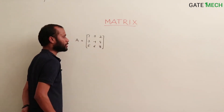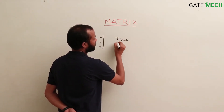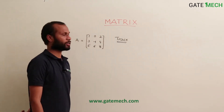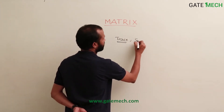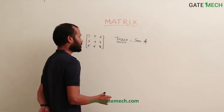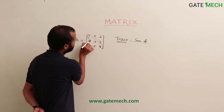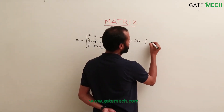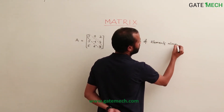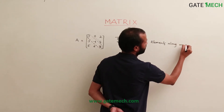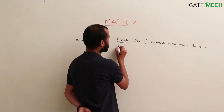This matrix is called A. There is one definition — trace. We'll see its significance later when we go through eigenvalues and eigenvectors. Trace is defined as the sum of elements along the main diagonal of a matrix, also called the principal diagonal. This is defined only for a square matrix.